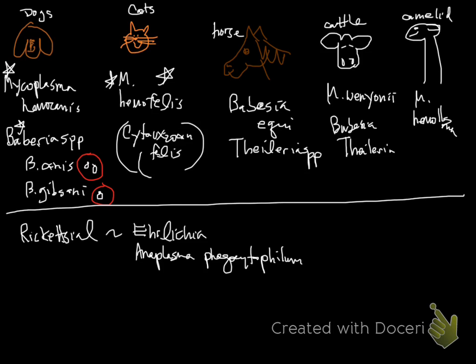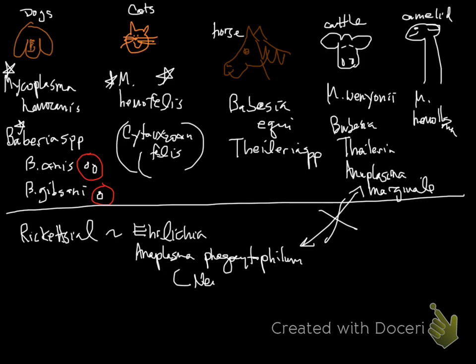An important one in cattle that I forgot to mention — and it doesn't really happen that often up here — is Anaplasma marginale, which is in red blood cells. This is not the same as Anaplasma phagocytophilum, which is found in neutrophils and causes thrombocytopenia. Anaplasma marginale specifically infects red blood cells.